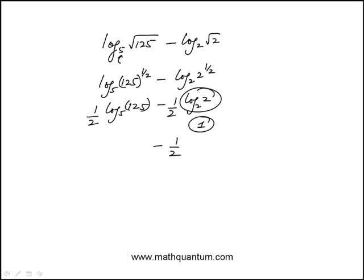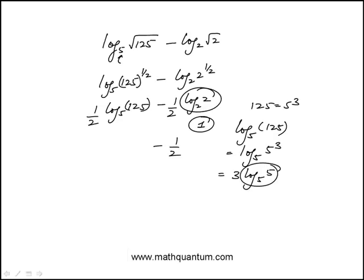Now 125 can be recognized as 5 cubed, so log base 5 of 125 equals log base 5 of 5 cubed, which is 3 times log base 5 of 5. That equals 3.